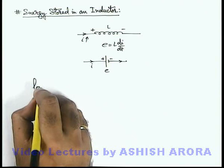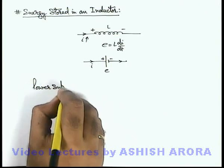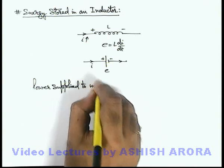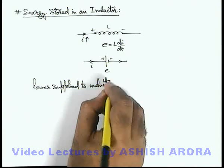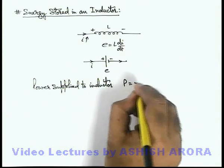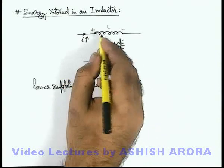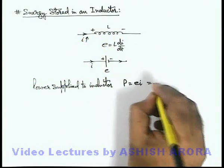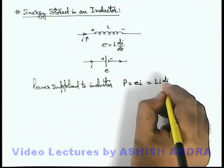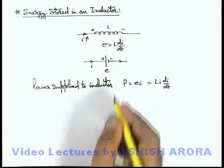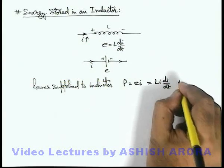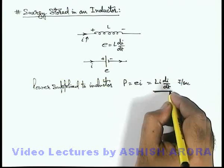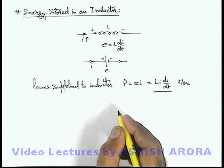We can write the power supplied to the inductor as P = ei watts, where e is the EMF induced and i is the current. This equals Li di/dt, the power supplied to the inductor in joules per second. This energy is being supplied or absorbed by the inductor.